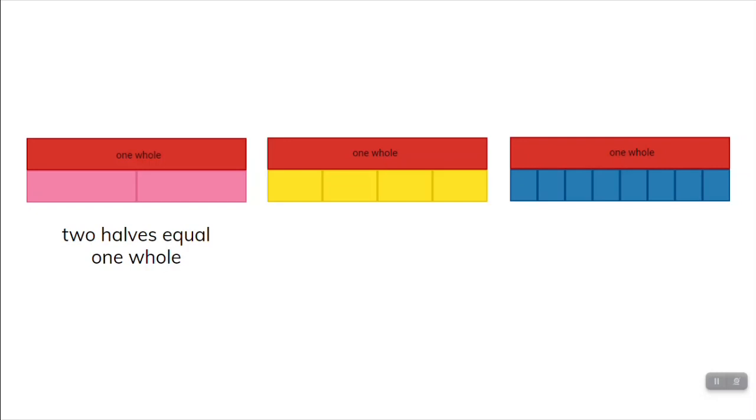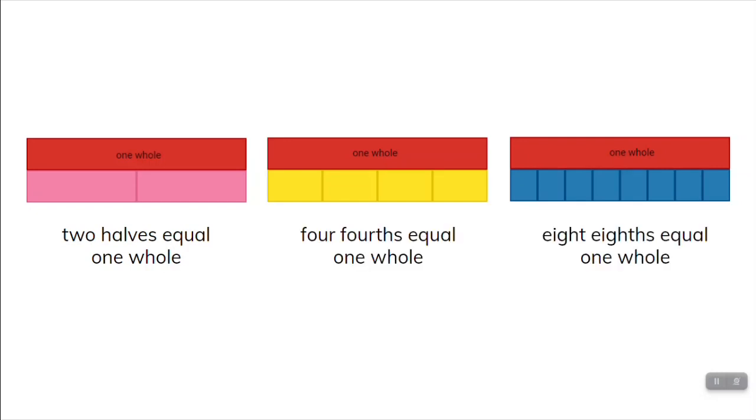Model the same process with fourths and eighths. Four fourths equal one whole. Eight eighths equal one whole.